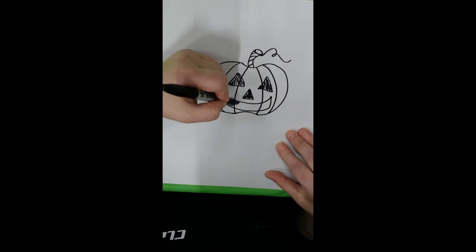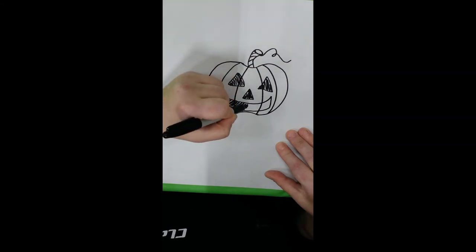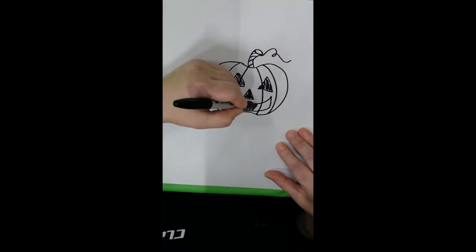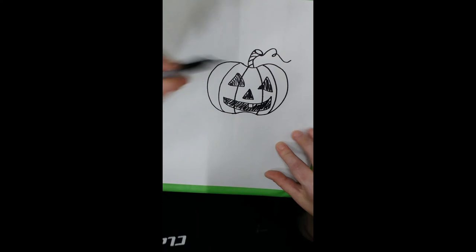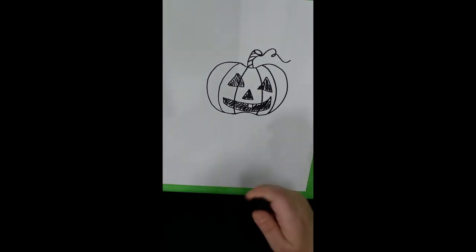Now we can color it in, and if we want we can draw a little square for his little tooth. And there you have a pumpkin.